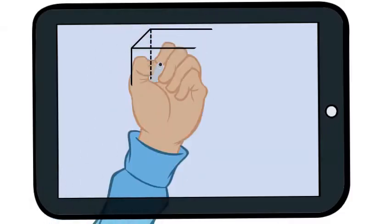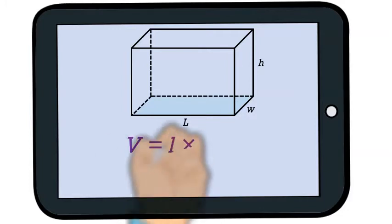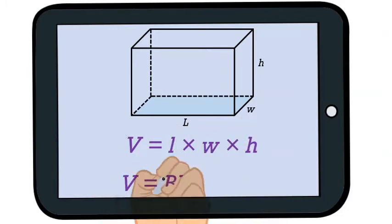The volume of a rectangular prism is the area of its base, length times width, times its height. You may see the formula written as V equals L times W times H or V equals a capital B times H and the capital B stands for area of the base.